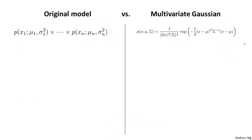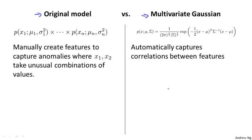When would you use each of these two models? The original model is probably used somewhat more often, whereas the multivariate Gaussian distribution is used less frequently but has the advantage of being able to capture correlations between features. For example, if you want to capture anomalies where features x1 and x2 take on unusual combinations of values — like the earlier example where CPU load and memory use took on an unusual combination — the multivariate Gaussian handles this naturally.